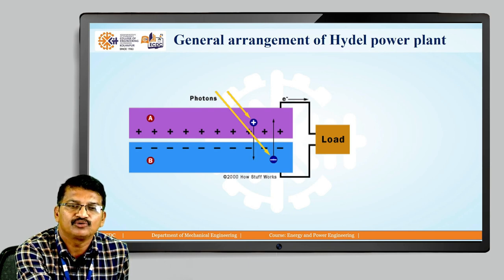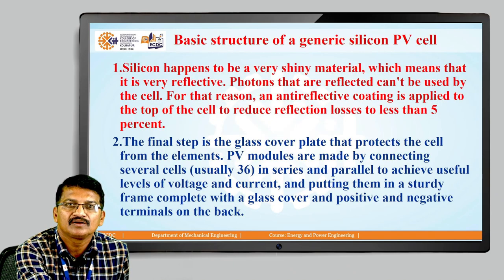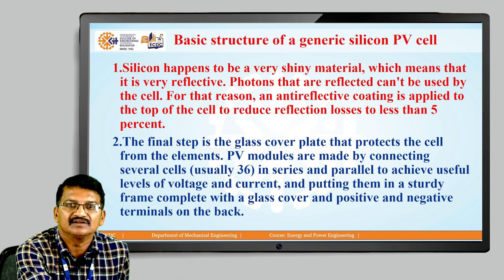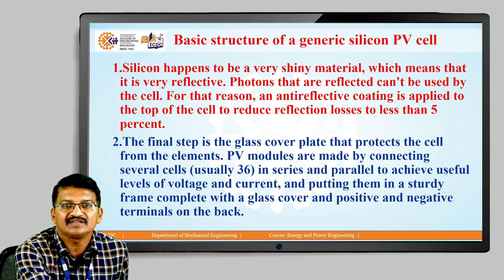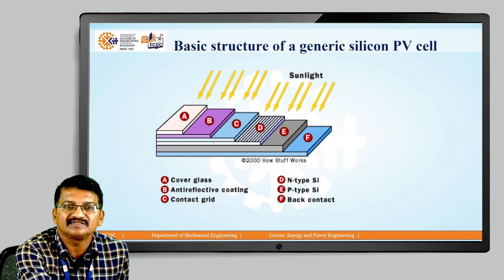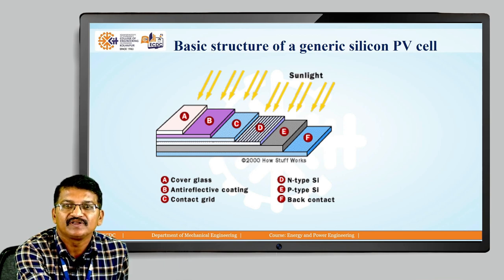You can see the photons coming from the sun rays and the load connected to the cell. Due to the flow of electrons we are getting electricity. This is the basic structure of the generic silicon PV cell. Silicon is a very shiny material, meaning it is very reflective — photons that are reflected cannot be used by the cell. For this reason, an anti-reflective coating is applied to the top of the cell to reduce reflection losses to less than 5%. The final step is a glass cover plate that protects the cell from the elements. PV modules are made by connecting several cells, usually 36, in series and parallel to achieve useful levels of voltage and current, and putting them in a sturdy frame complete with a glass cover and positive and negative terminals on the back. The PV cell consists of a cover glass, anti-reflective coating, contact grid, n-type silicon, p-type silicon, and back contact.